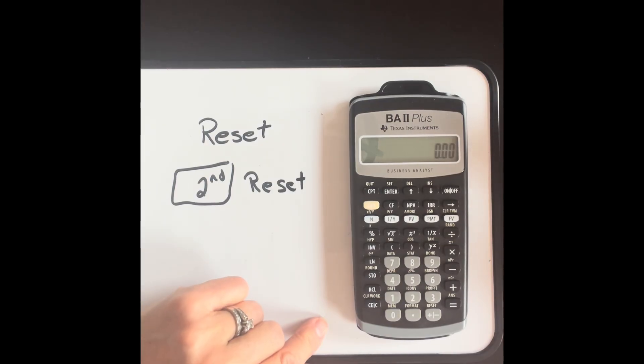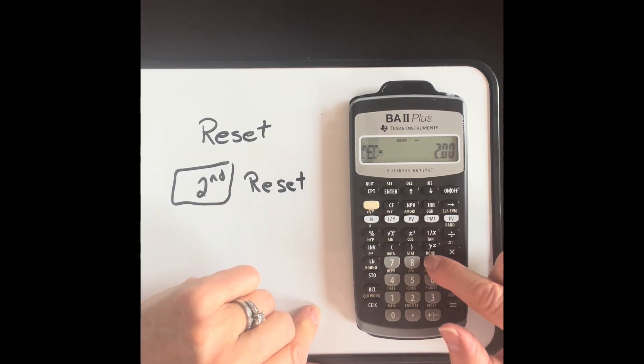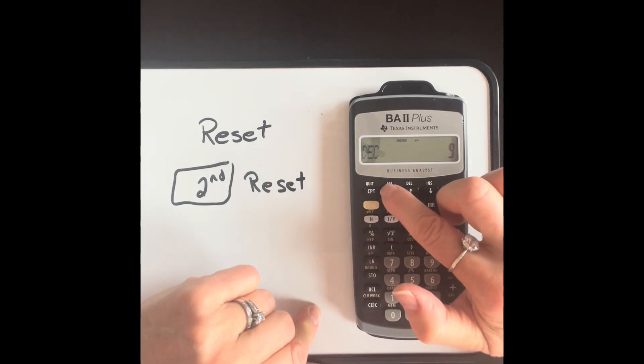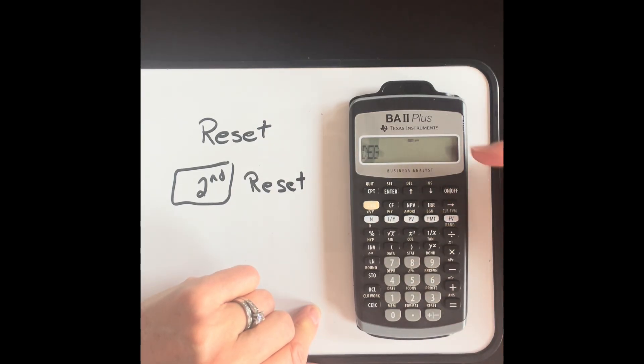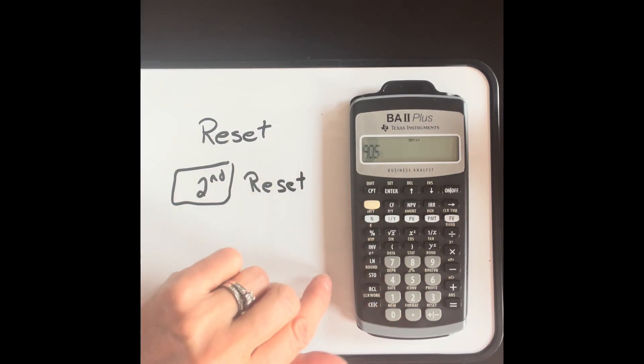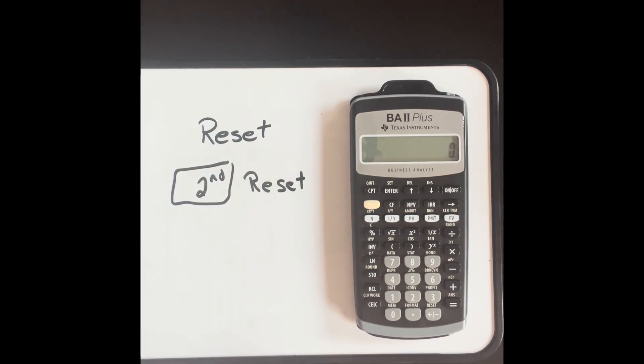And just to review how we change them back to what my preferred settings were, we go second format. I'm going to change from two decimal places to a floating decimal point. So that'll be nine. Enter. Then I'm going to leave it in degree mode. I'm going to leave it U.S. date. I'm going to leave it U.S. decimal point and comma. I don't want chain. I want AOS, algebraic operating system. So I'm going to go second, enter, and that changes it. And now I'm going to quit, second quit. So now I'm back to a floating decimal point and following order of operations.